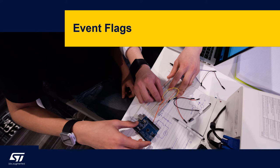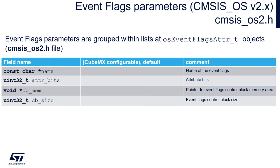We will focus on the CMSIS OS version 2 implementation, so let's take a closer look at event flags. The attributes of event flags are specified within the osEventFlagsAttr_t type, defined in the cmsis_os2.h file. The only attribute we need to specify manually is the name of the event flag; the rest — attribute bits, pointer to the control block memory area, and control block size — will be filled automatically after creation.